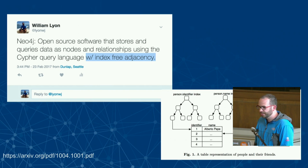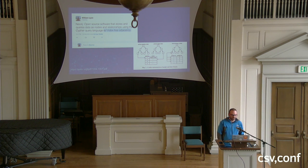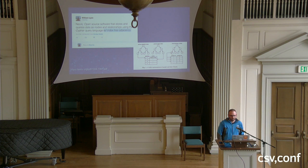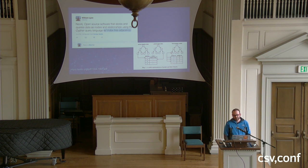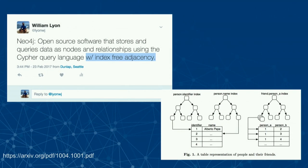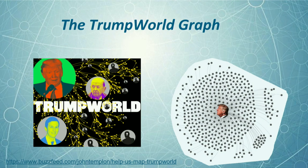The other piece is that with graph databases we have this concept of index-free adjacency. As we traverse the graph — going from one node to another — we do this without an index lookup. So we have constant-time performance of graph traversals, which means our queries can scale to very large data sets and still have the same performance characteristics.